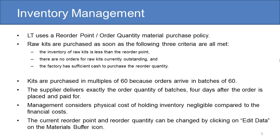LT uses a reorder point/order quantity raw material purchase policy. That is, raw kits are purchased as soon as the following three criteria are all met: 1. The inventory of raw kits is less than the reorder point. 2. There are no orders for raw kits currently outstanding. 3. The factory has sufficient cash to purchase the reorder quantity.